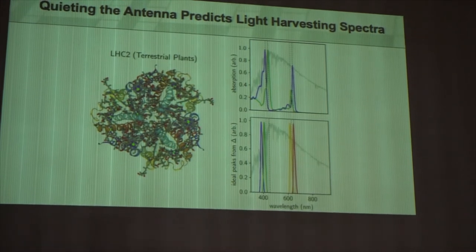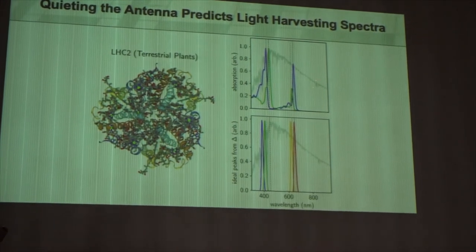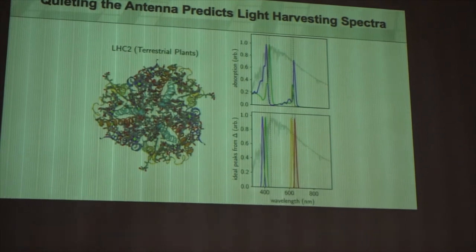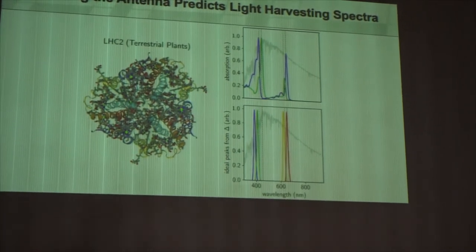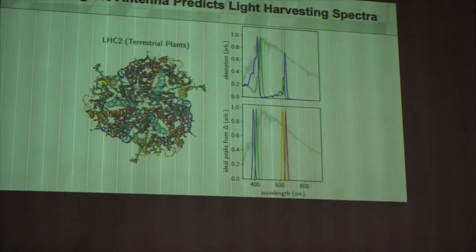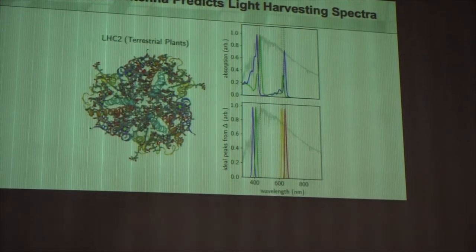And then we ran our model, and we said, if we have that input spectrum, what are the most optimal wavelengths to absorb? And it turns out we got two pairs exactly, or very close, to where they show up in green plants.